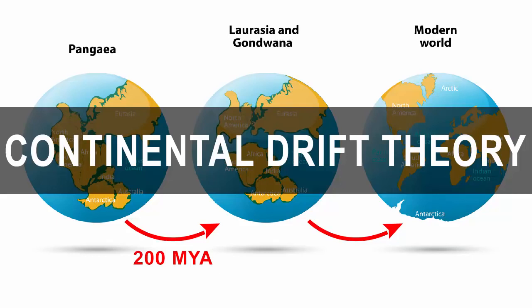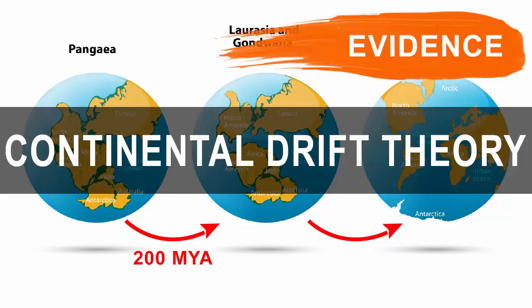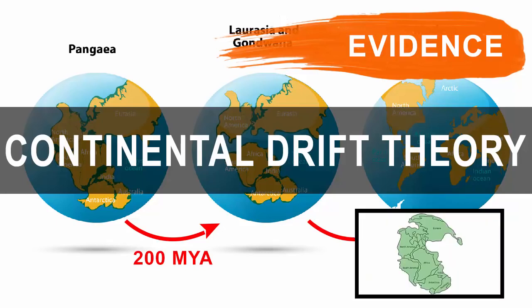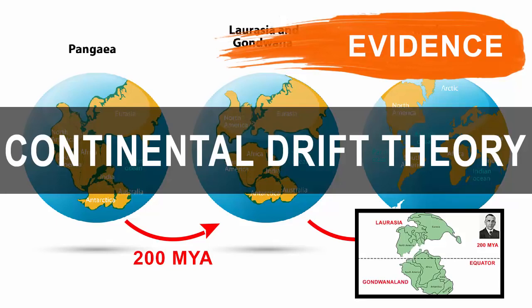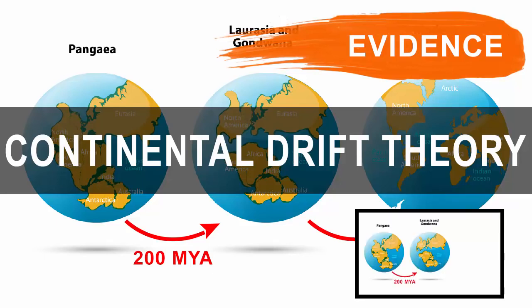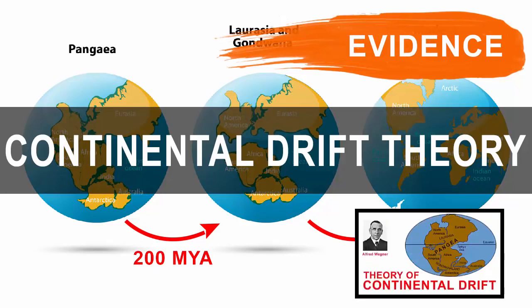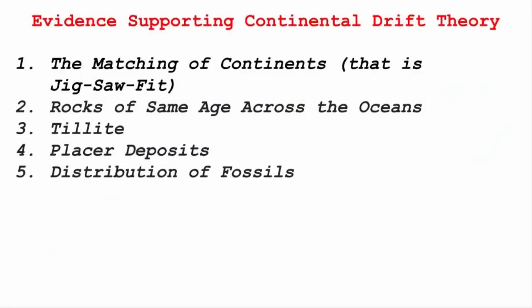In this video, we're going to look at what are the evidence that supports the Continental Drift Theory. In case you haven't watched the video on the Continental Drift Theory, please do so — the link is in the description and you'll get some context. In total, there are five points that provide strong evidence that the Continental Drift Theory is real.